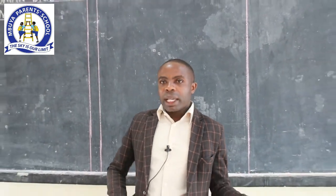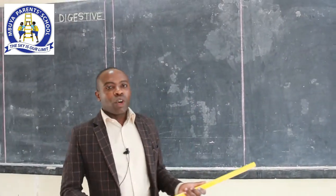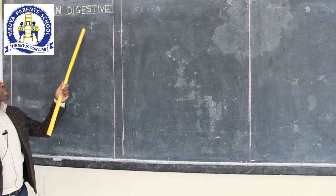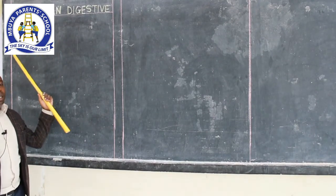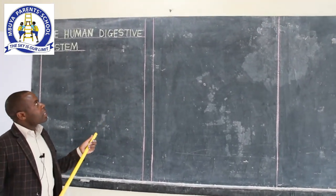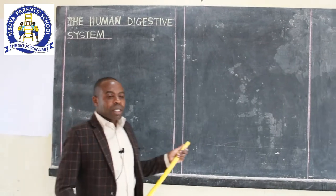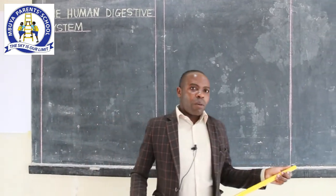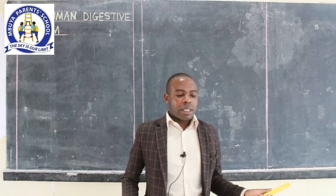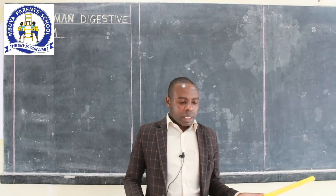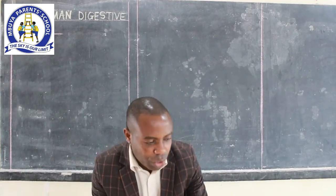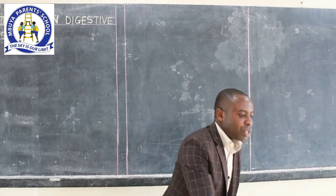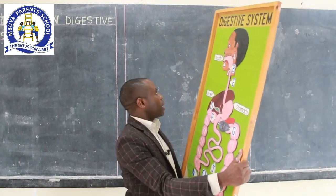The second target is knowing the organs that form the digestive system in man. And then the last one is giving the functions of parts of the digestive system. In our lesson, we have got a model that we are going to use, as you are seeing it here.